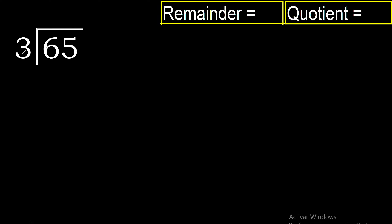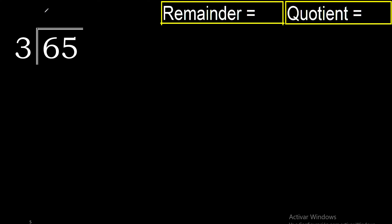65 divided by 3. 6 is not less than 3, therefore we take 6. 3 multiplied by 3 is 9 — excessive. 3 multiplied by 2 is 6. 6 is the closest. 6 minus 6 is 0.